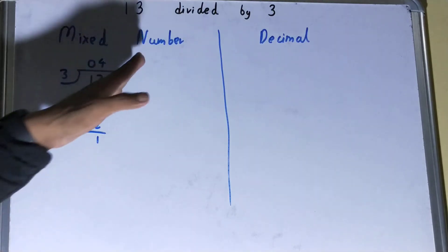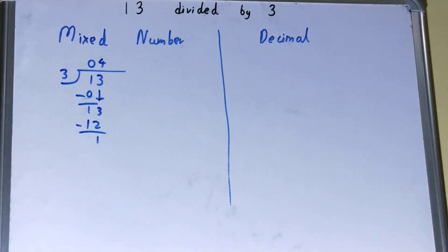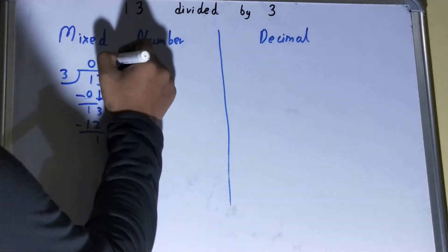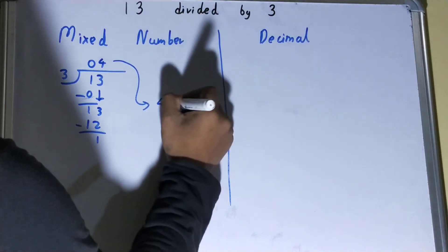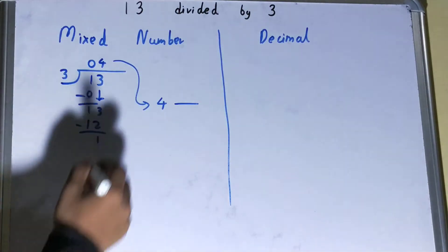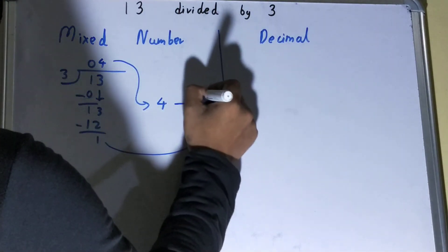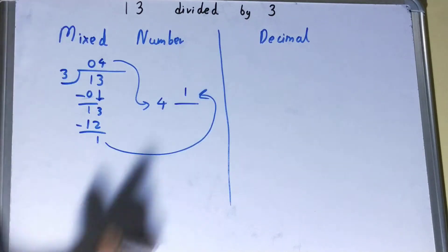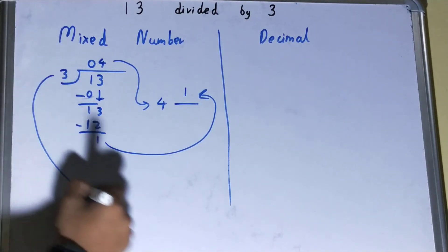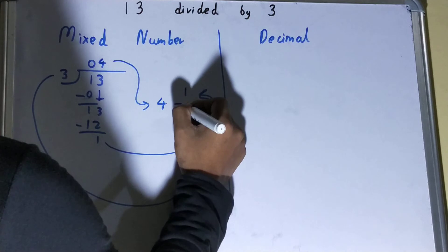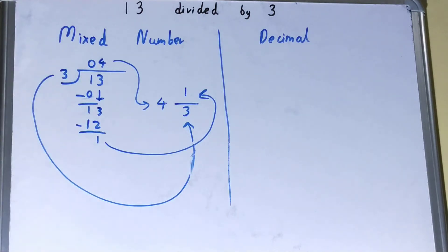Once you get a number which is less than one and you don't have anything to bring down to divide, you will stop right there. Your quotient will become the whole part of the mixed number, your remainder will become the numerator, and your divisor will become the denominator. That will be your answer of 4 and 1/3.